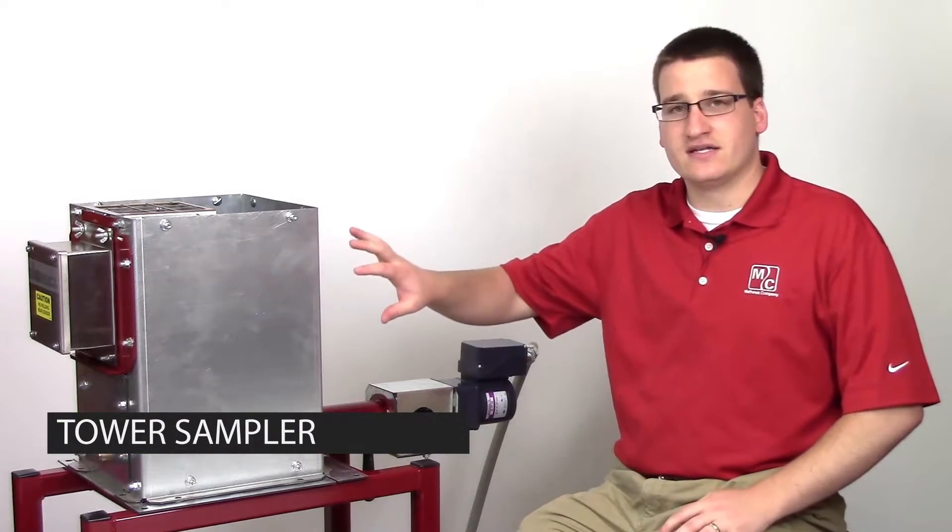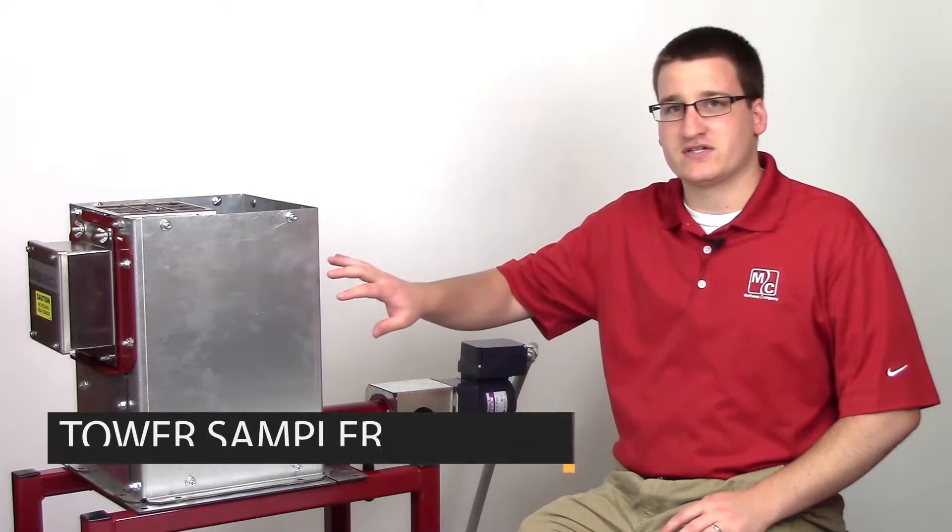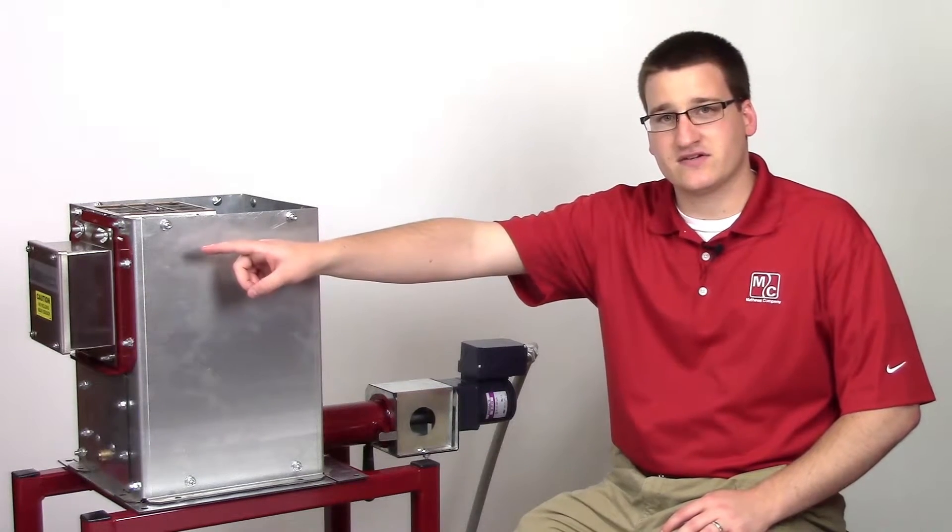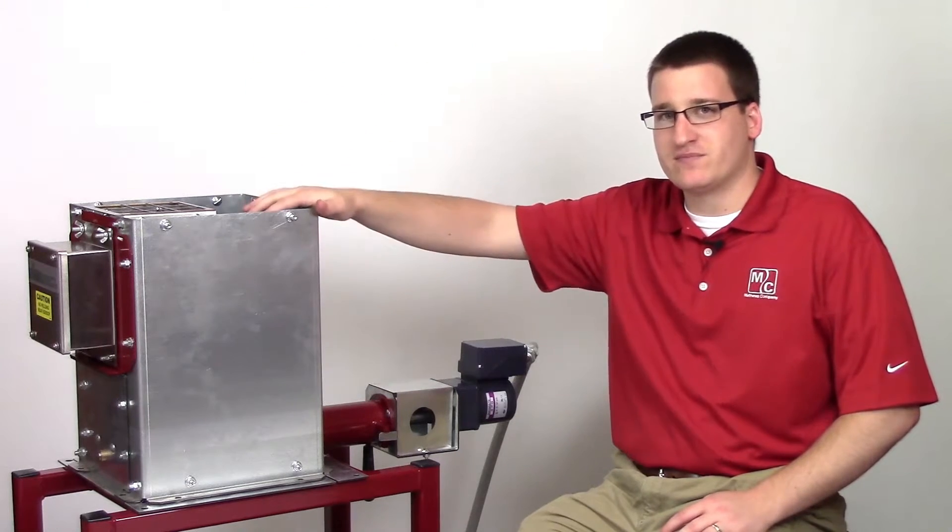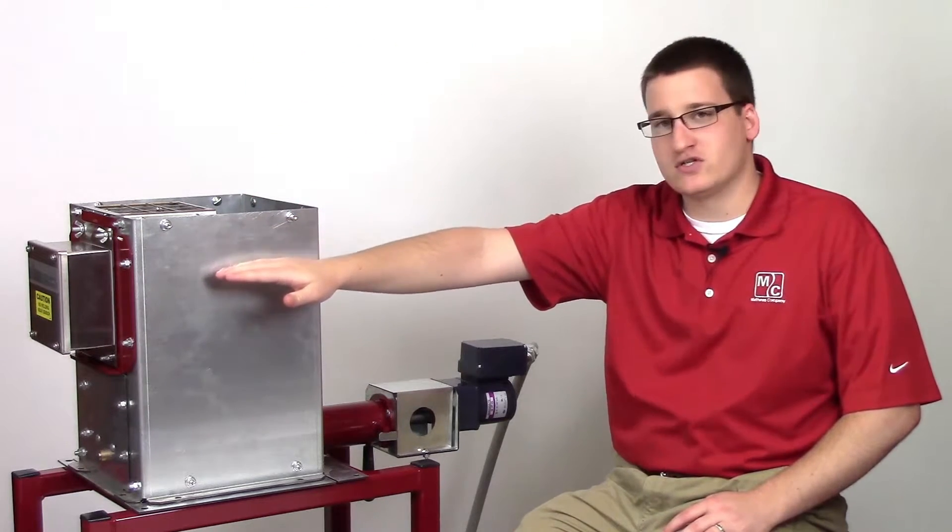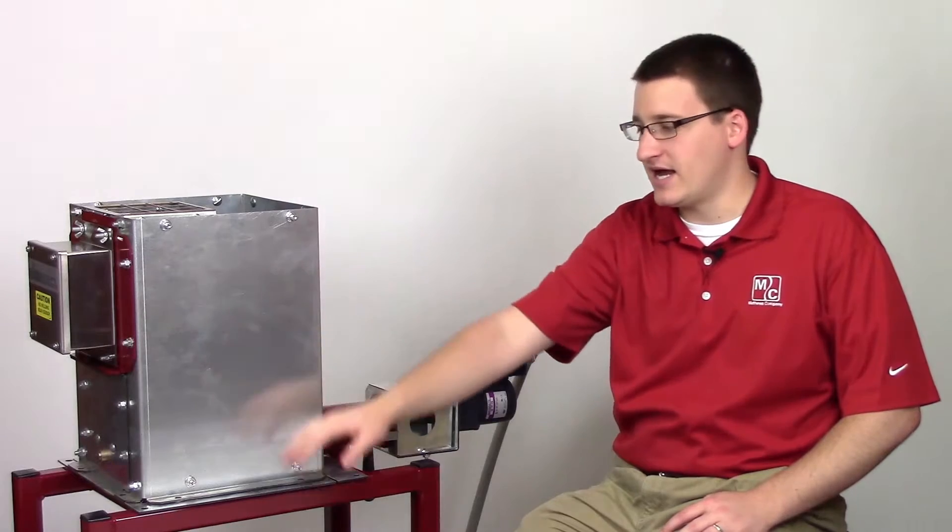We can see here a demo of a tower discharge sampler. You can see the sensor is mounted on the back and grain would be passing down from the top. It would move slowly past the sensor fin and out the bottom.